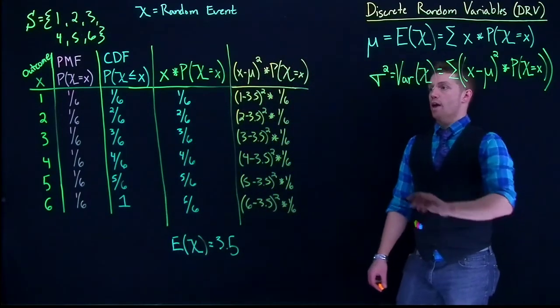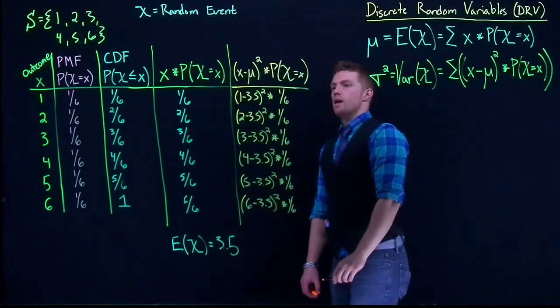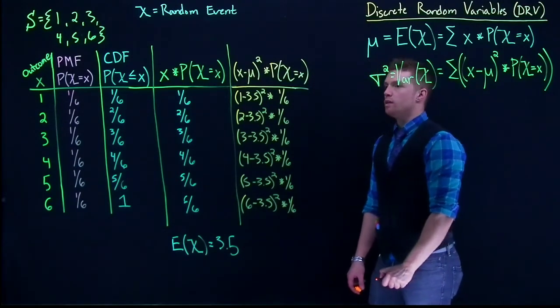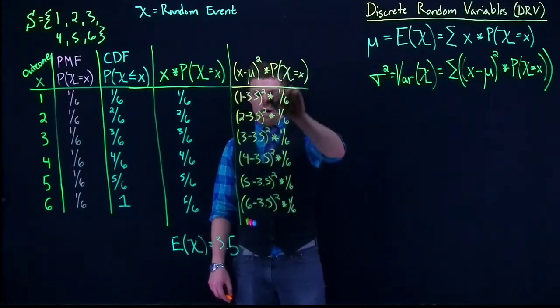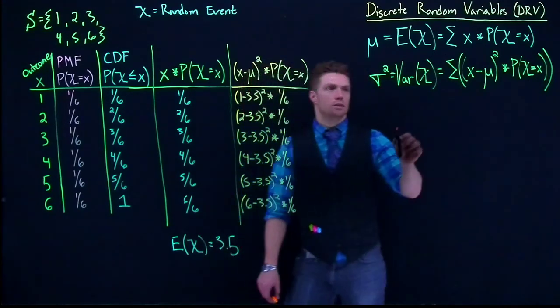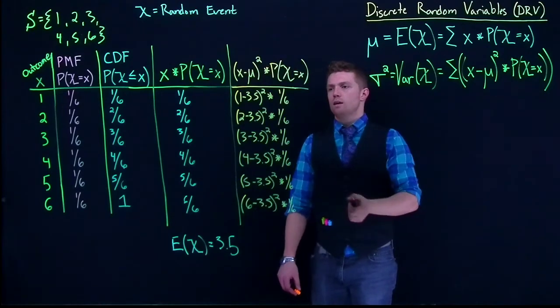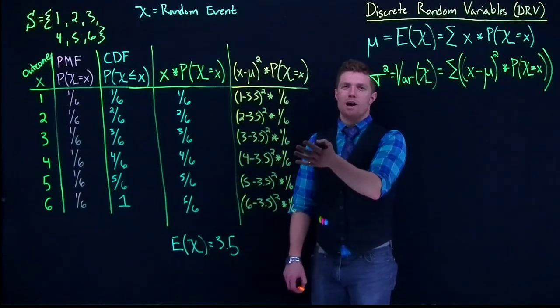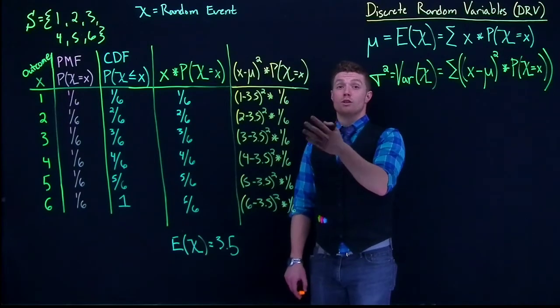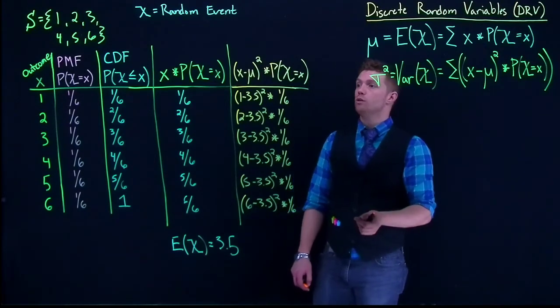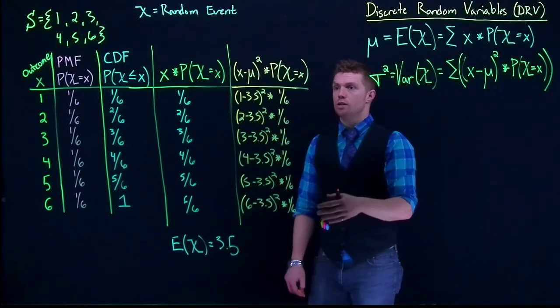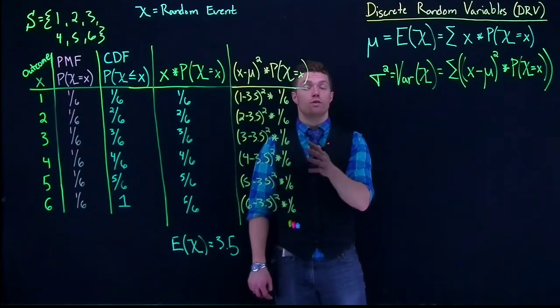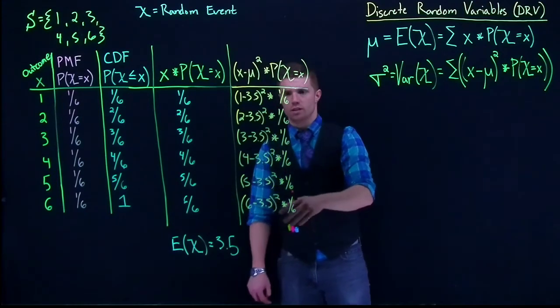All right, so we have all these individual parts. And then, in order to do this, we would in fact sum those all up to get the variance. Now, most of the time, we don't do this by hand. We can use some of our tools like Excel or we can use software in order to kick out these values. And I'll show you how to actually do this in the guide.